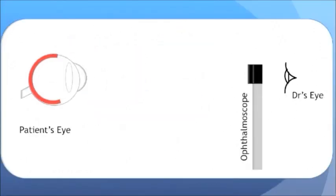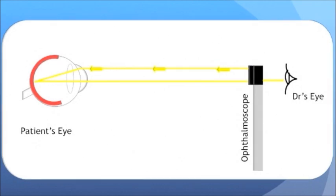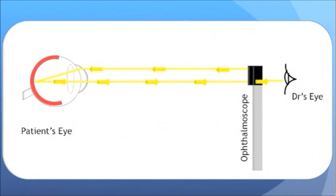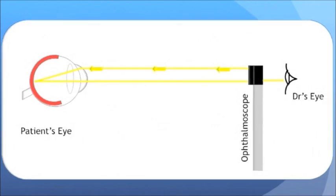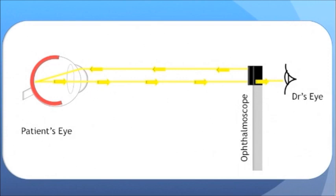The red reflex test involves passing a beam of light from a direct ophthalmoscope into the patient's eye. The light travels through the normally transparent ocular media and is reflected off the ocular fundus, transmitting the light back through the optical media, the ophthalmoscope and into the eye of the examiner. This is viewed by the examiner as a red reflex.